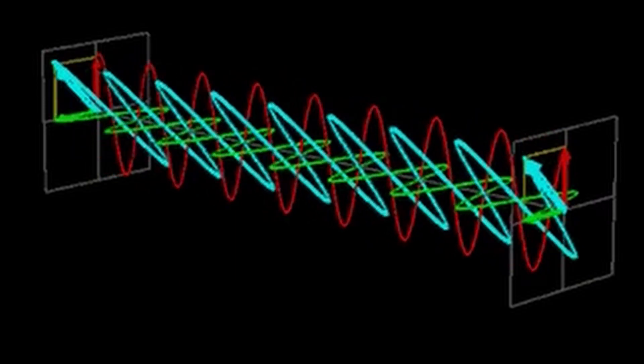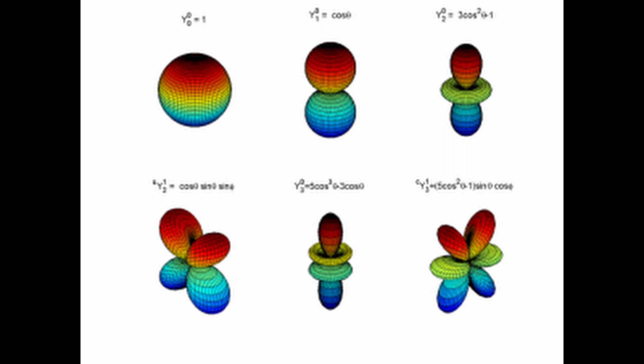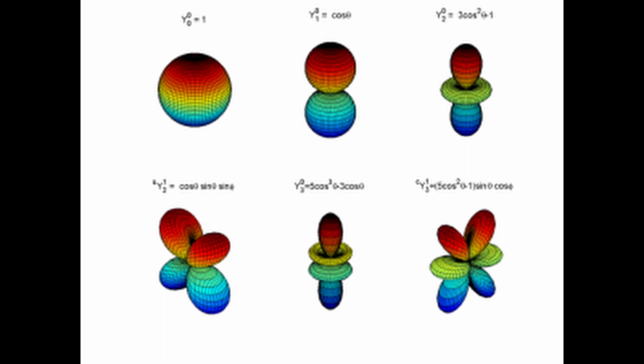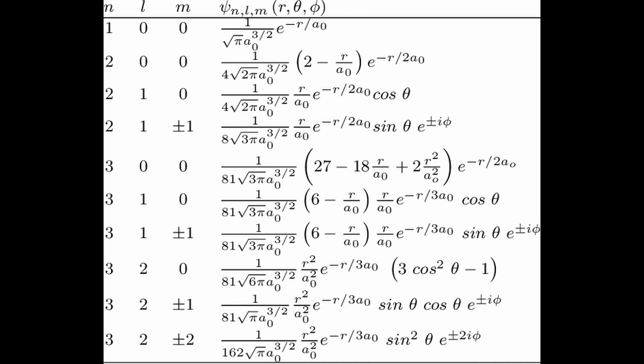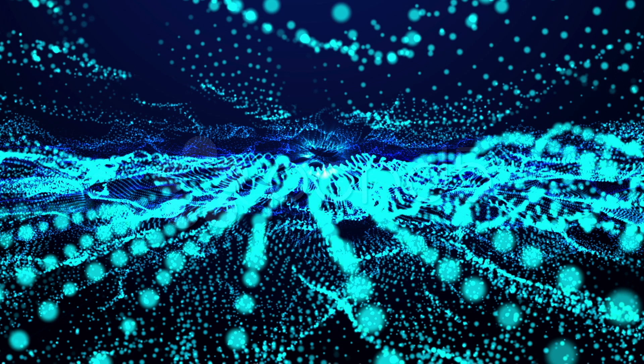To ensure that the wave function is normalized, we must find a normalization constant A such that A² times the integral of |ψ(x,t)|² dx equals 1, where the normalized wave function satisfies the normalization condition. This means we can normalize any wave function by dividing it by the square root of the integral of the square of its magnitude over all space. The normalization of the wave function is important because it ensures that the probability of finding a particle in a given space is well defined and can be interpreted correctly. The normalization condition is a fundamental requirement for any physical system that obeys the laws of quantum mechanics.